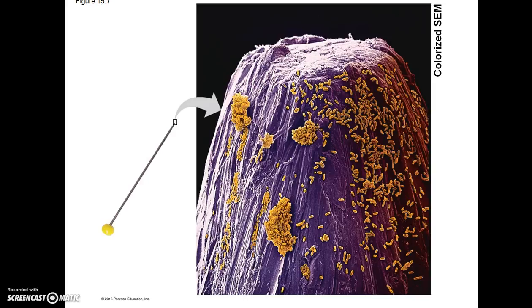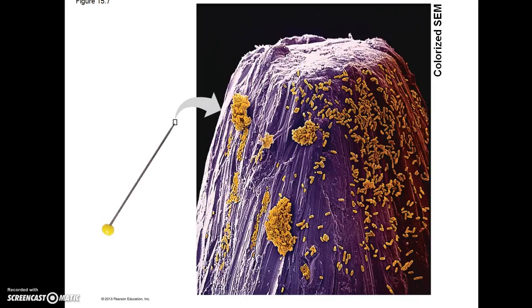This is an interesting micrograph of the point of a pin, magnified many times, and these little yellow things are actually bacterial cells. You can see that this point is actually covered in bacterial cells. This is why it's very important to practice aseptic or sterile techniques in medicine and to make sure that any instruments you are using have been thoroughly sterilized.